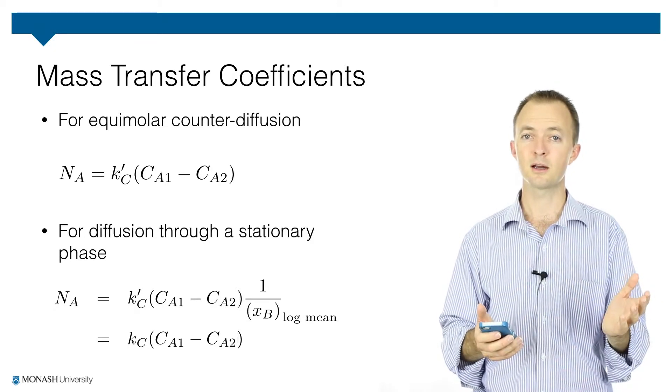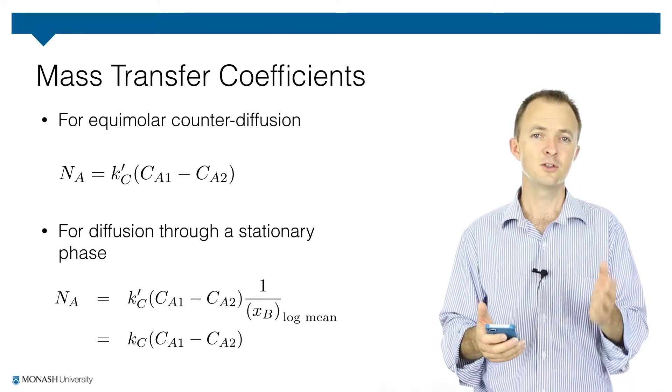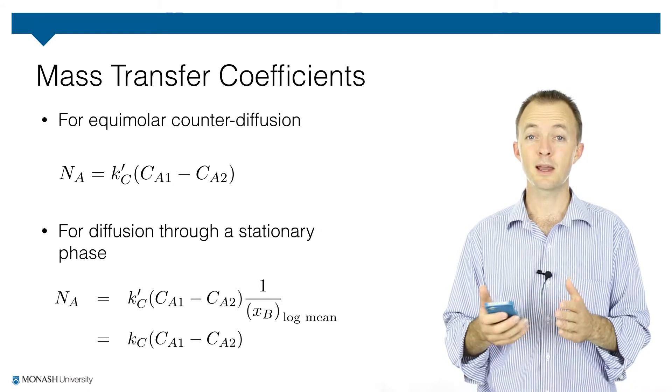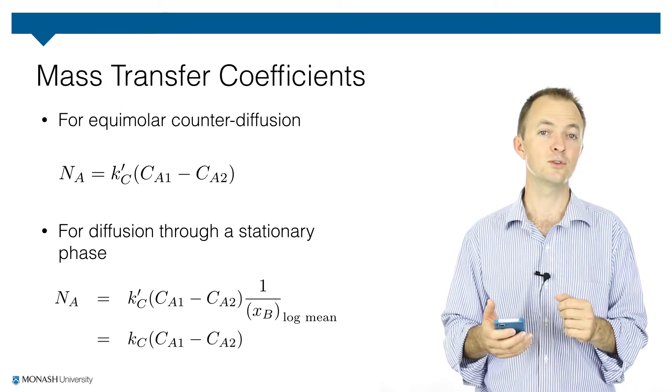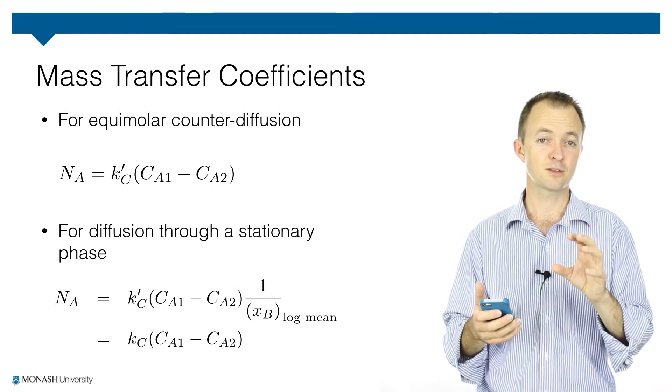And just as we could previously, we can apply a log mean correction factor to use a mass transfer coefficient for the case where we have diffusion through a stagnant non-diffusing phase. We can also combine our mass transfer coefficient